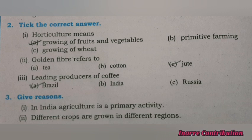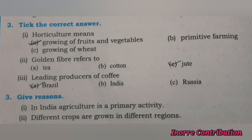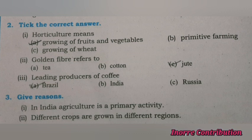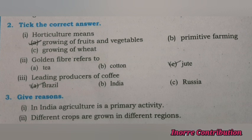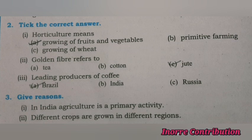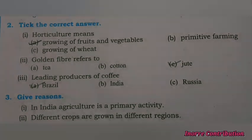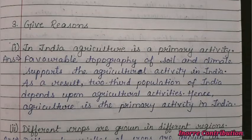Tick the correct answer. First, horticulture means growing of fruits and vegetables. Second, golden fiber refers to jute. Third, leading producer of coffee is Brazil.